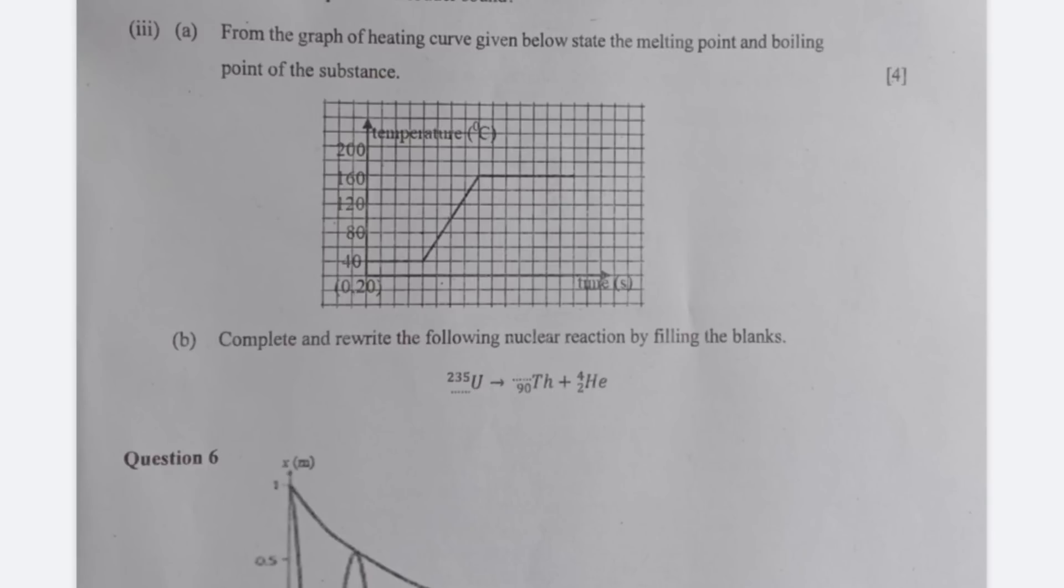From the graph, you need to state the melting point and the boiling point of the substance. The melting point will be 40 degree Celsius and the boiling point will be 160 degree Celsius.